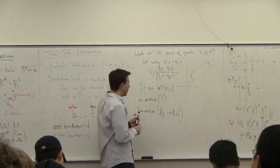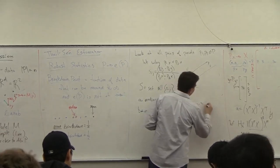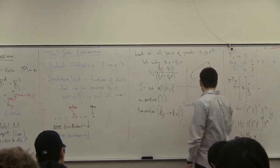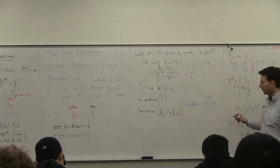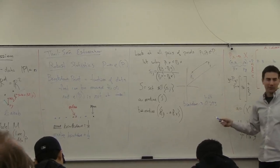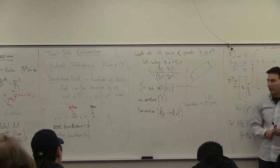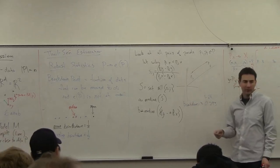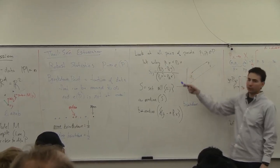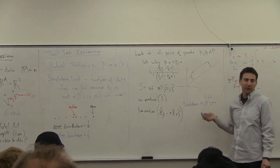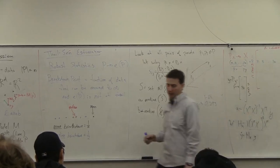You can show that the breakdown point is going to be about 0.293 — I think this is like one minus square root of two or something like this. Basically that means you can have up to about 29% of your points as outliers and this will still be okay. And it's also in one dimension fairly easy to calculate. The median of a set you can do in linear time. But you need to calculate n-squared of these slopes. So you can do this naively in n-squared time.